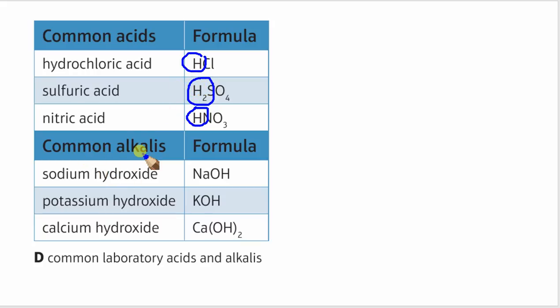If we look at common alkalis, we can see we've got these hydroxide ions. Most of the alkalis we come across have hydroxide ions. When we dissolve these substances in water, the compound splits. The hydroxide ions dissociate, they come off, and they're swimming around in that aqueous solution.